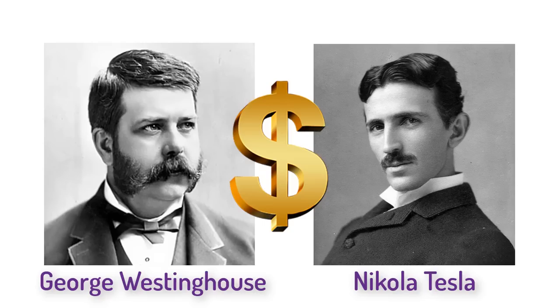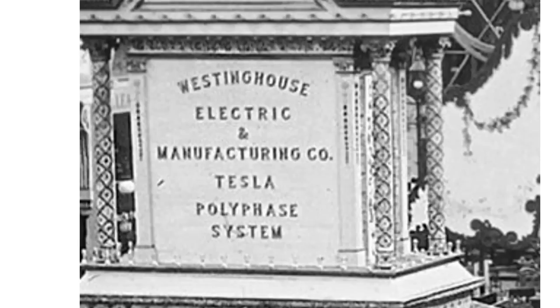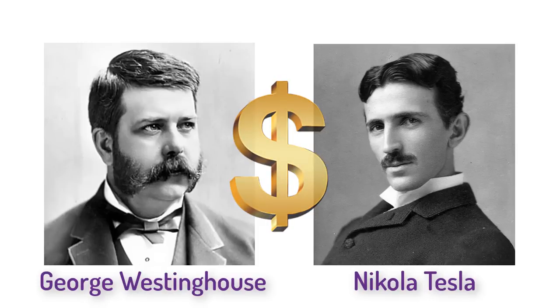In 1888, while Brown was killing dogs, Westinghouse paid Tesla and his company $70,000 in cash and notes, plus $2.50 per horsepower on every Tesla motor from then on. Three years later, there was a stock market crash and Westinghouse was in deep trouble. He went to Tesla and pleaded for release from the payments on his motors, saying, quote, "Your decision determines the fate of the Westinghouse company." Tesla then tore up his contract.